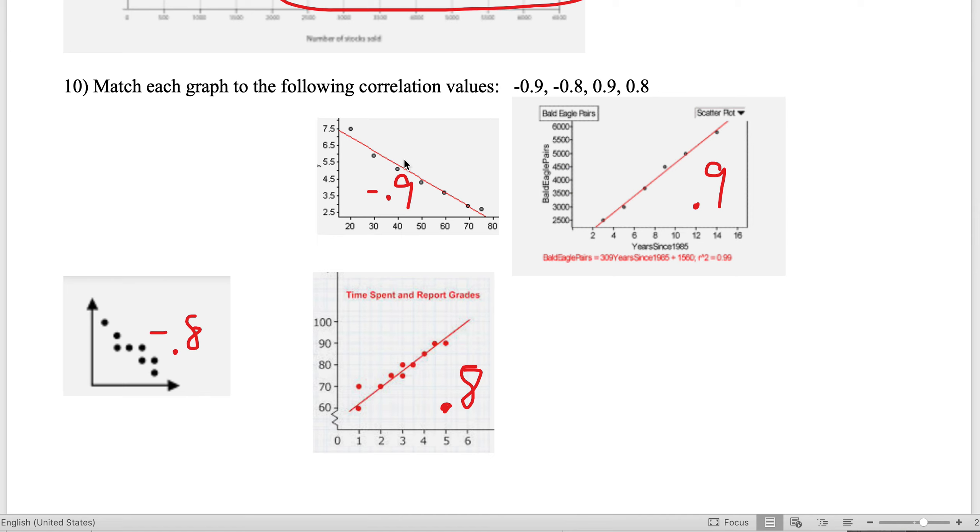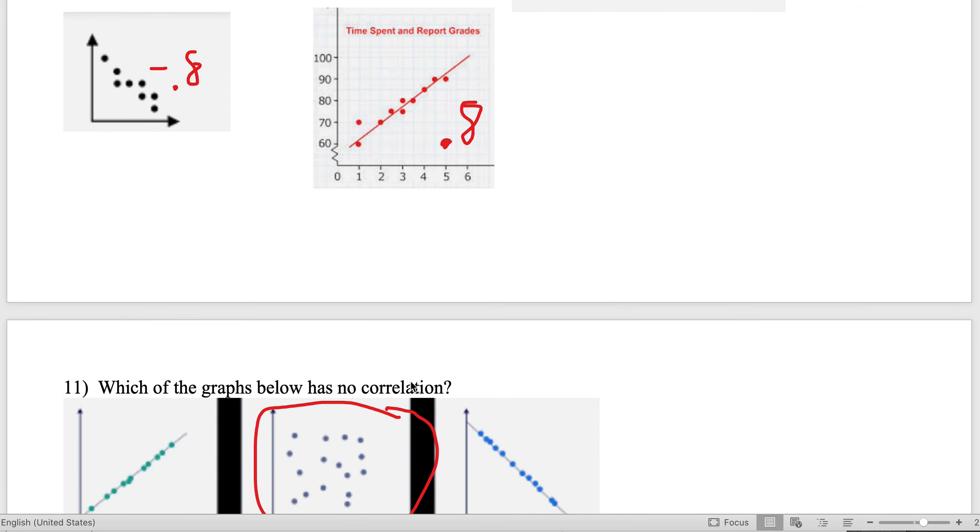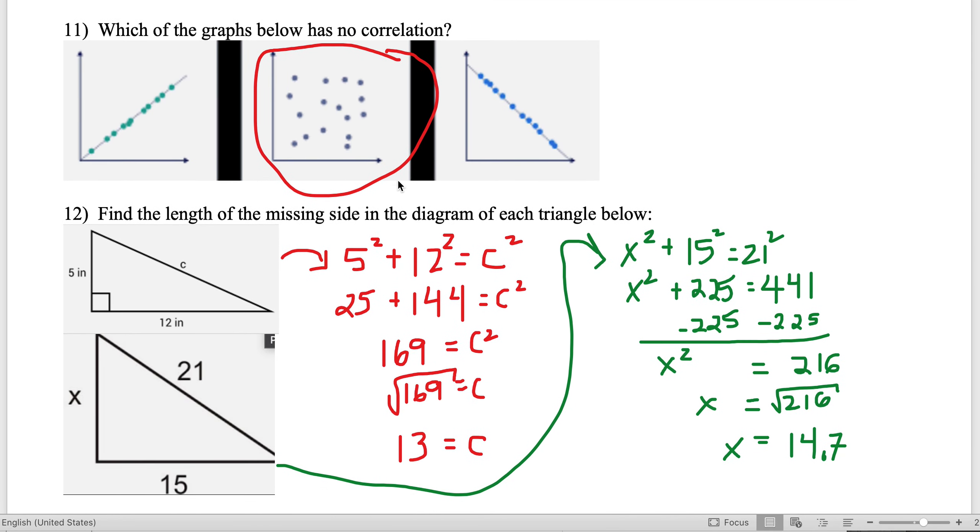Match each graph to the corresponding values. Here's my two negatives—remember, a negative correlation is like a negative slope. It goes down and to the right. The tighter the points are to the line, the closer it is to negative one. This graph with -0.9 has points tighter to the graph than the other one, so the other is -0.8.